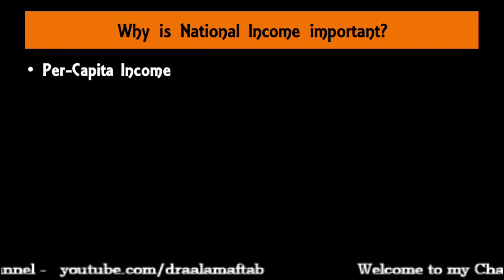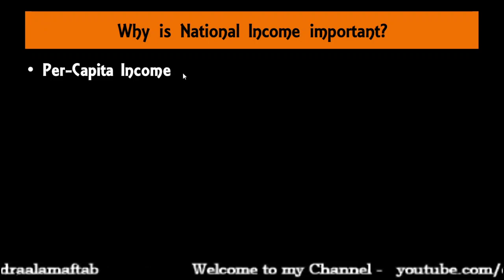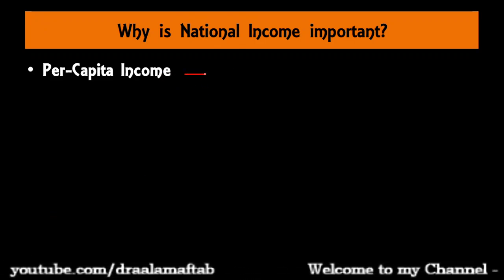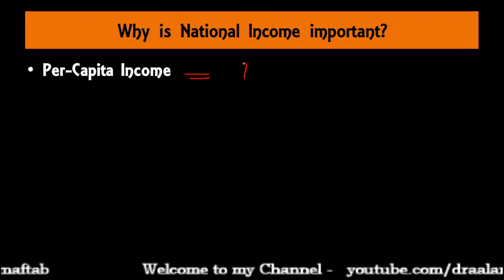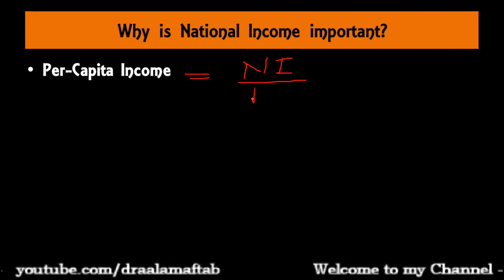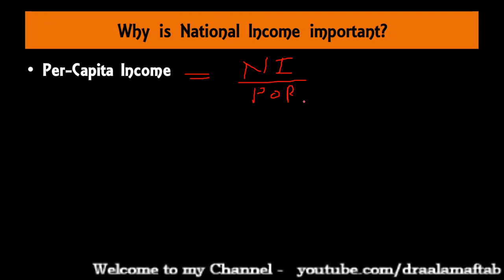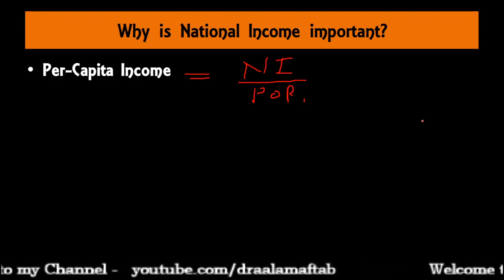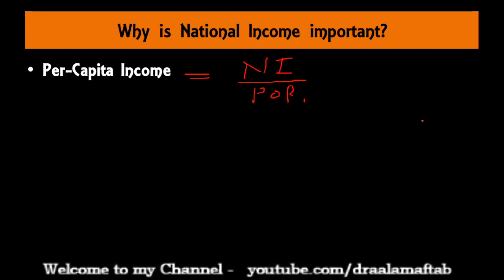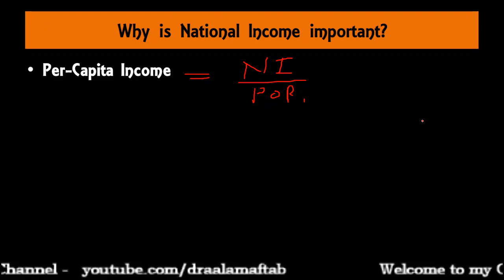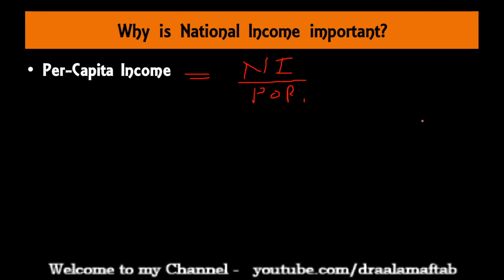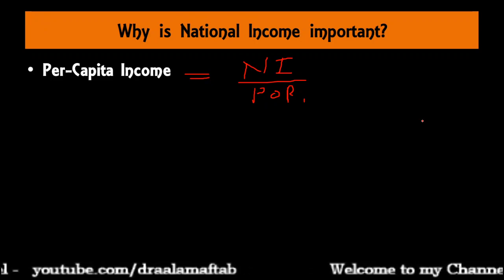The next point is per capita income. To know the per capita income, you need to know national income. Once you know the national income, you can easily calculate per capita income — you simply divide national income by the population of the country. Per capita income reflects the economic welfare of the country: the higher the per capita income, the higher the economic welfare, and vice versa. So from this angle also, the study of national income is important.